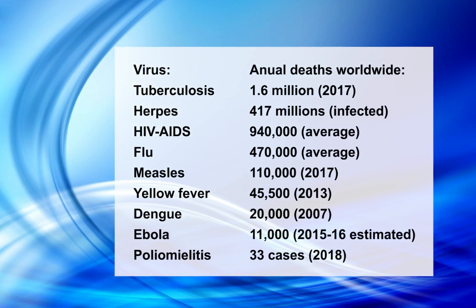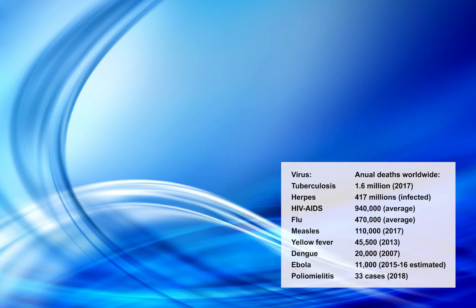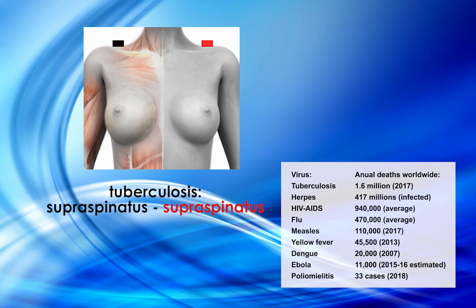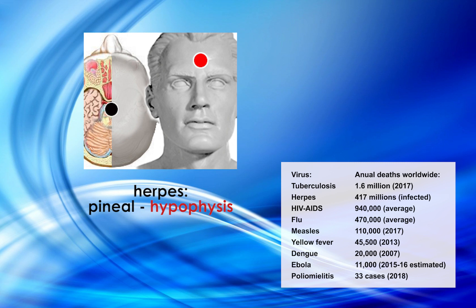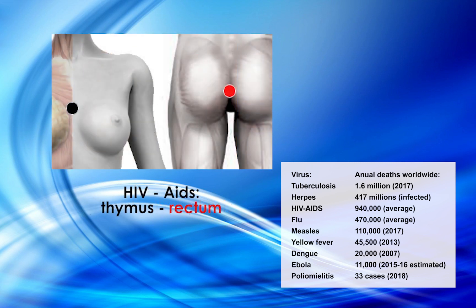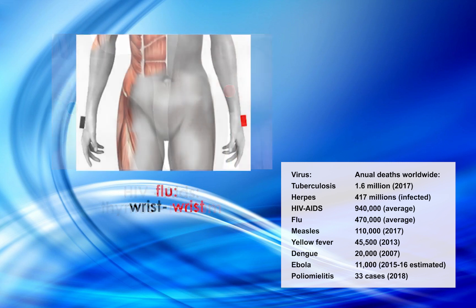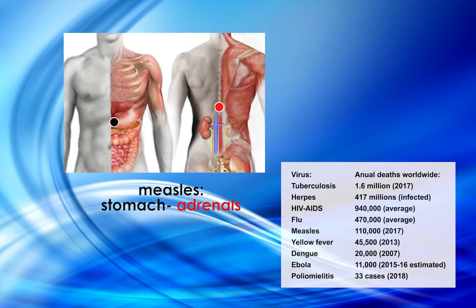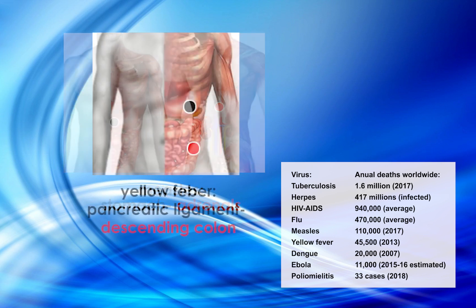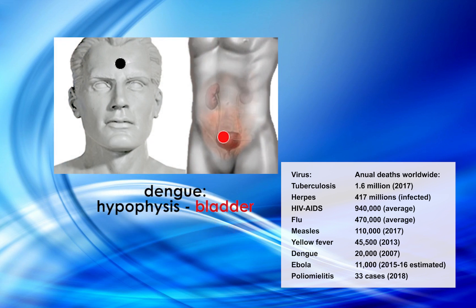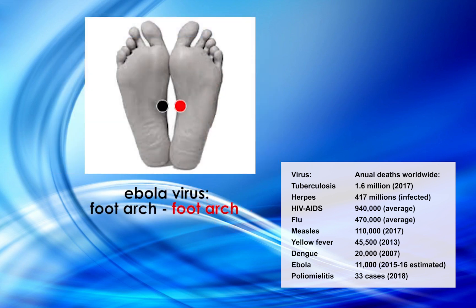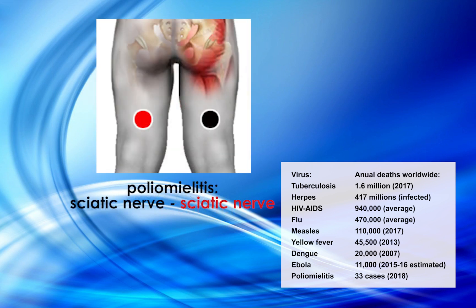According to WHO report, annual deaths worldwide: Tuberculosis — 1.6 million (2017). Herpes — 417 million. HIV/AIDS — 940,000 (2017 average). Seasonal flu — 470,000 (2017 average). Measles — 110,000 (2017). Yellow fever — 45,500 (2013 average). Dengue — 20,000 (2007). Ebola — 11,000 (2015–16 estimate). Poliomyelitis — 33 cases (2018).